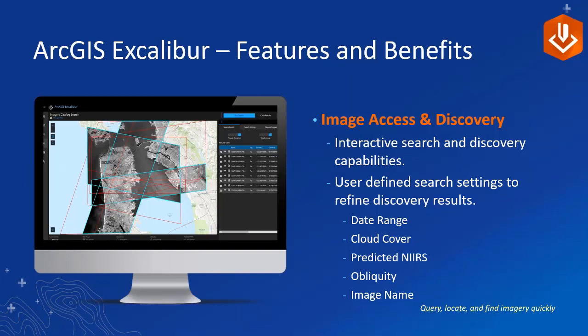Excalibur provides customers with a variety of benefits and features. Walking through the typical user workflow, we have an integrated imagery access and discovery capability, fully integrated inside the platform. This integrated approach has user-defined settings to quickly help users find results. You can filter by date ranges, cloud coverage, and obliquity — including image names. We give analysts the flexibility to personalize their experience to find the specific imagery they need, instead of crawling through thousands of images clicking each one.